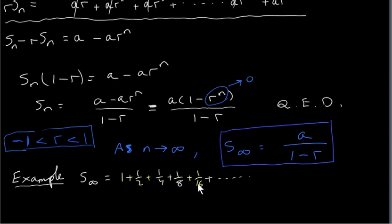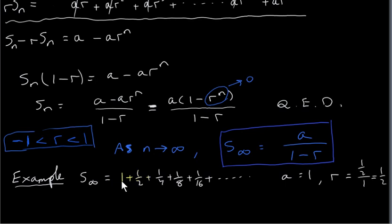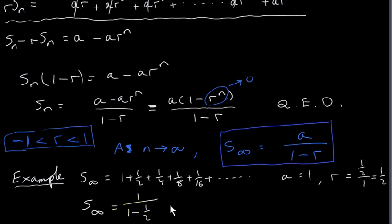As an example, let's take this series. The first term A is 1, and the common ratio — which must be between minus 1 and plus 1 for us to be able to sum the series — is a half divided by 1, which is a half. We take t2 and divide by t1 to get r. Since a half lies between minus 1 and plus 1, it makes sense to sum this series — this series will converge. So S infinity is A over (1 minus r), which is 1 over (1 minus a half), and that equals 1 divided by a half, which is 2.